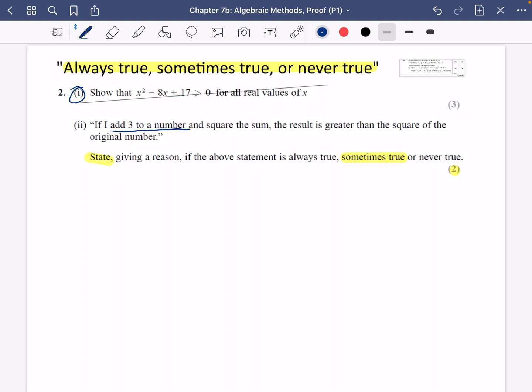So I'm going to translate this sentence. It says if I add three to a number and then square the sum, so I have a number, I'm going to add three to it and square the sum. They think that the result is greater than the square of the original number. So I'm going to try and find out if this is sometimes true. If it's sometimes true, I need to find an example where it is true and an example where it is false.